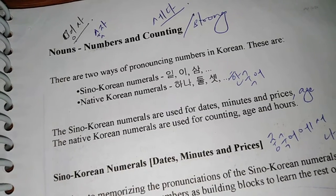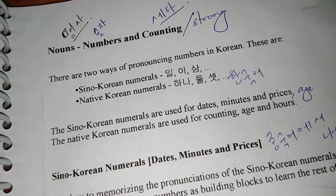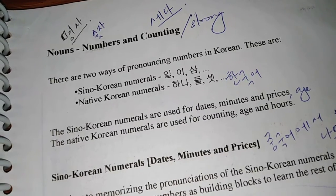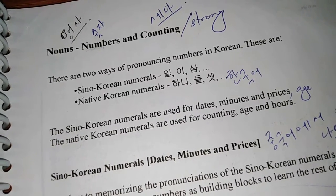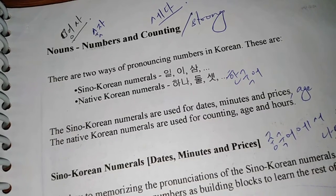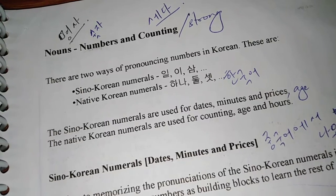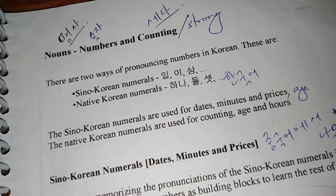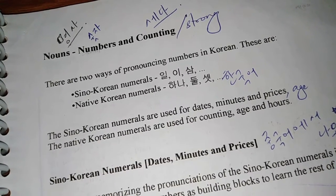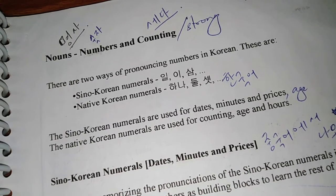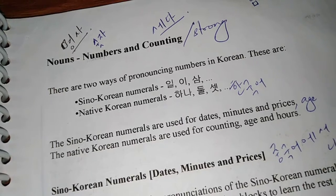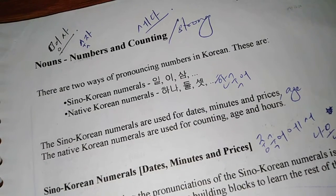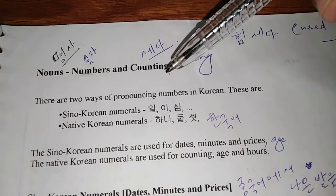Sino-Korean numerals are derived from Chinese. You could say that it is the remnants of a time when Chinese culture and language was a lot more involved in Korean country, culture, and language. As for Native Korean numerals, as the name indicates, it is completely Korean—it has completely Korean origins.